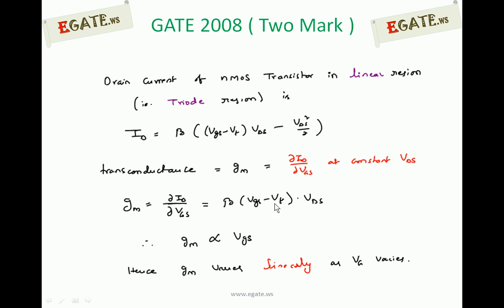For a constant Vds, gm is proportional to Vgs. Hence, gm varies linearly as Vg increases.